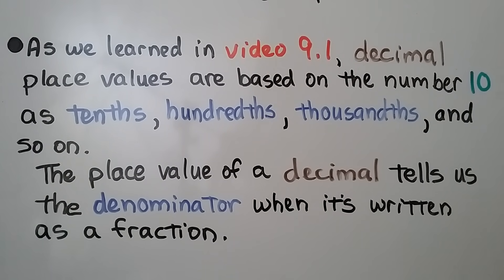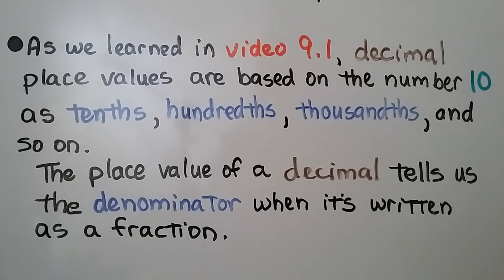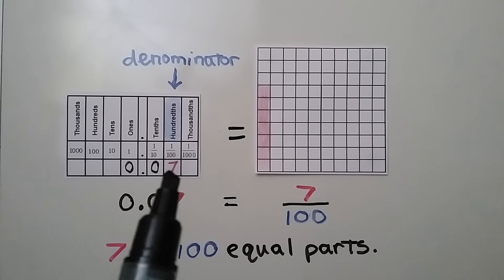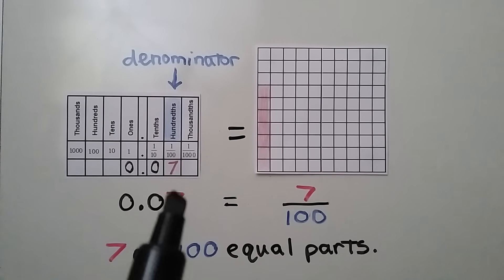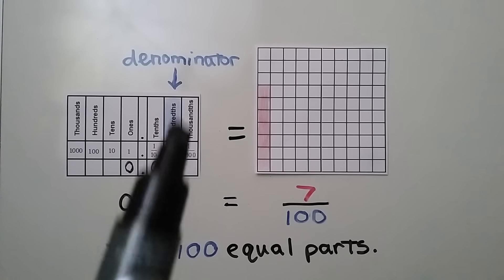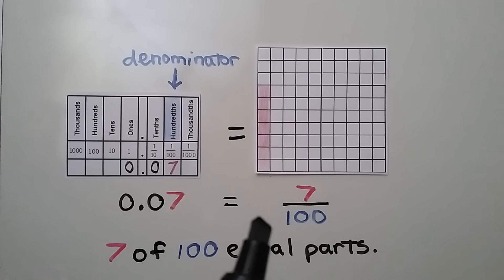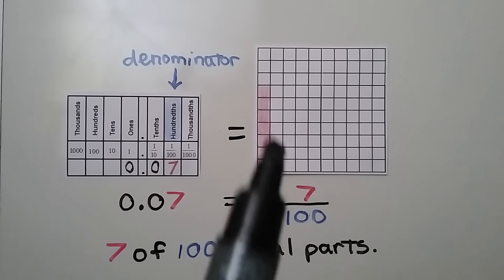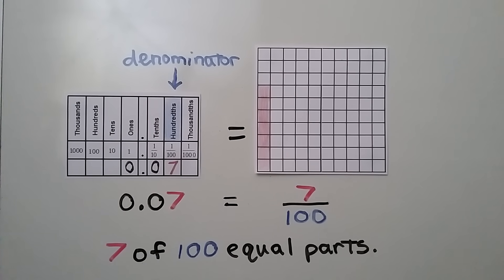As we learned in video 9.1, which is linked in the description, decimal place values are based on the number 10: tenths, hundredths, thousandths, and so on. The place value of a decimal tells us the denominator when it's written as a fraction. We can look at the place value chart and see the 7 is in the hundredths place, so when we write it as a fraction it's going to be over 100 — seven hundredths. Seven squares are shaded out of these 100 squares; seven of 100 equal parts is shaded.